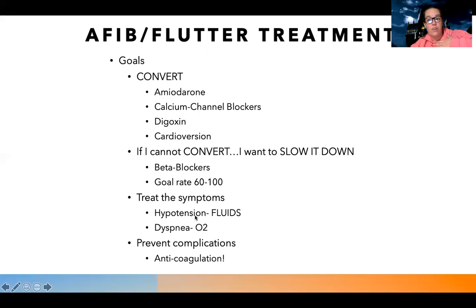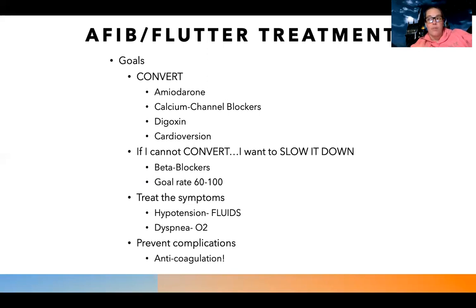I'm also going to treat the symptoms. If the patient's blood pressure is low or they're not tolerating it, I'll give them fluids as ordered. If they're short of breath or not breathing well, I'll give them oxygen therapy to support them until we can get them back to normal rhythm or decrease their rate. Then I'm going to prevent complications - a lot of these patients are going to be on lifelong anticoagulant therapy. Once you have atrial fibrillation, you're at high risk for having it again. Blood pools, clots form, and those clots spew out to the rest of the body - very dangerous. So these patients are usually on lifelong anticoagulation.